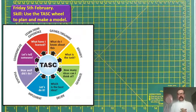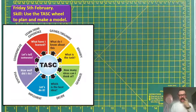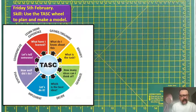Good afternoon, Year 5. It's Friday afternoon, the sun's in the sky as usual. Looking forward to the weekend, and we're going to start this afternoon by talking about the task wheel. So this week and next week we are going to be focusing on some DT — design and technology.